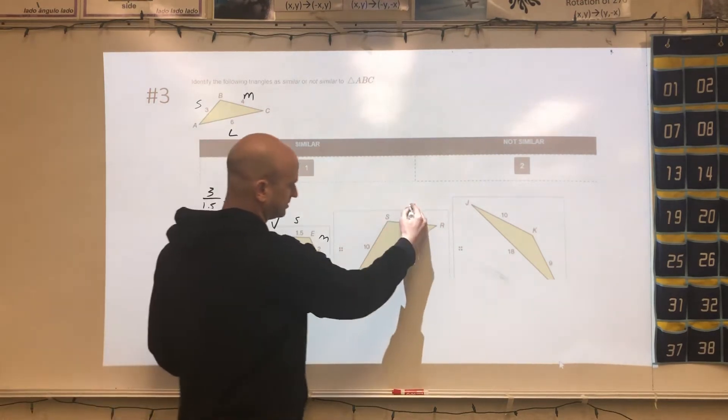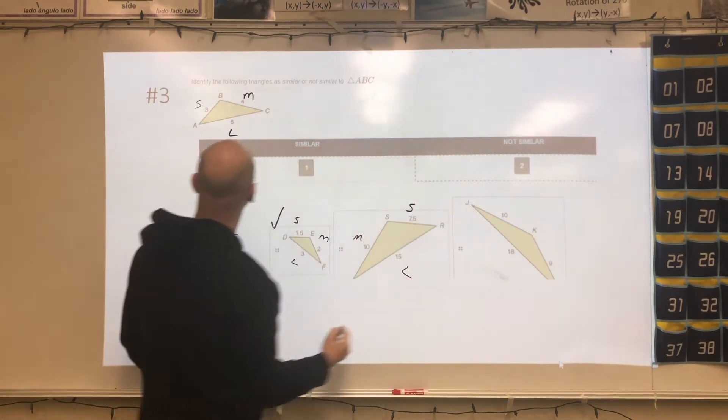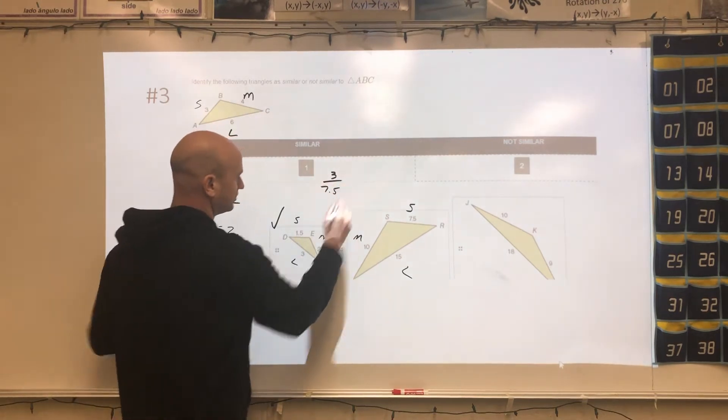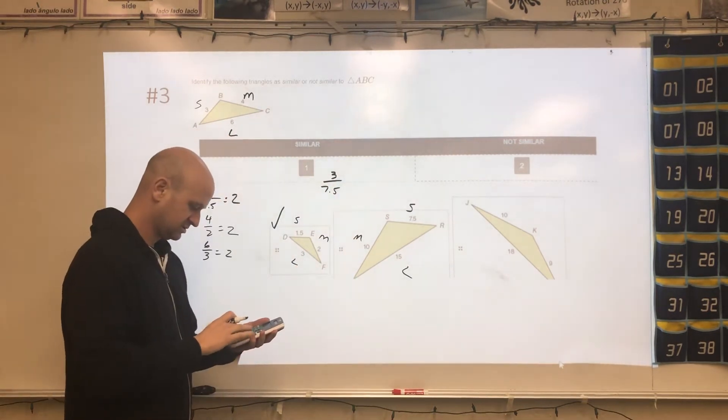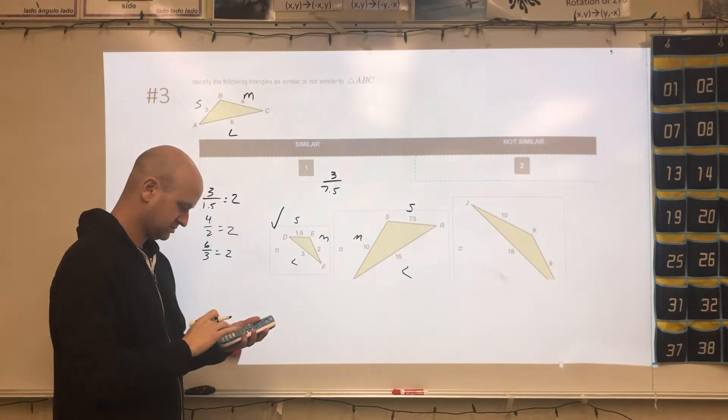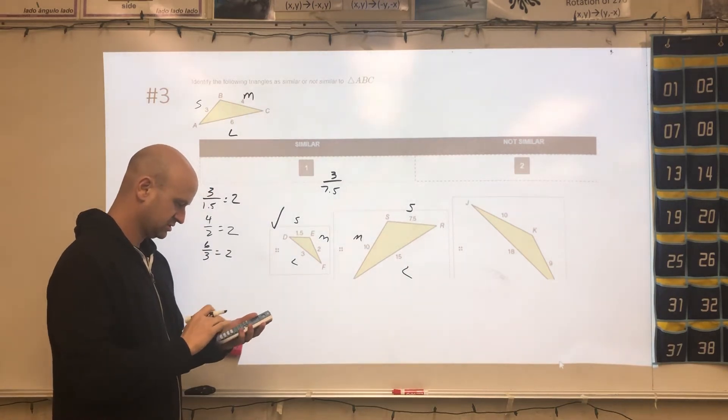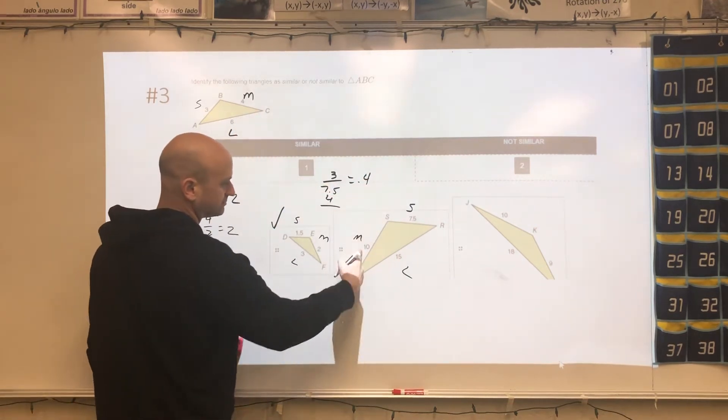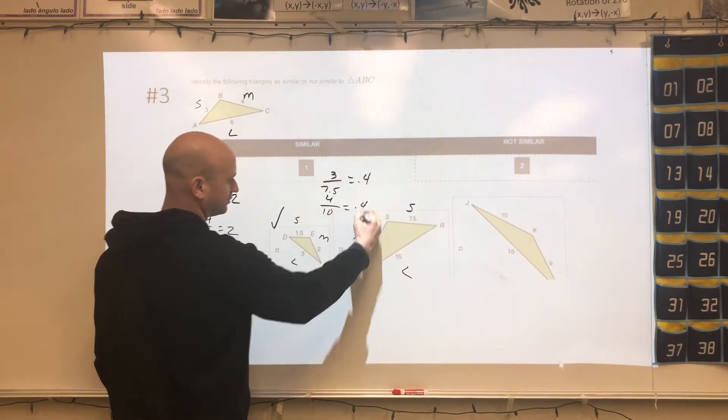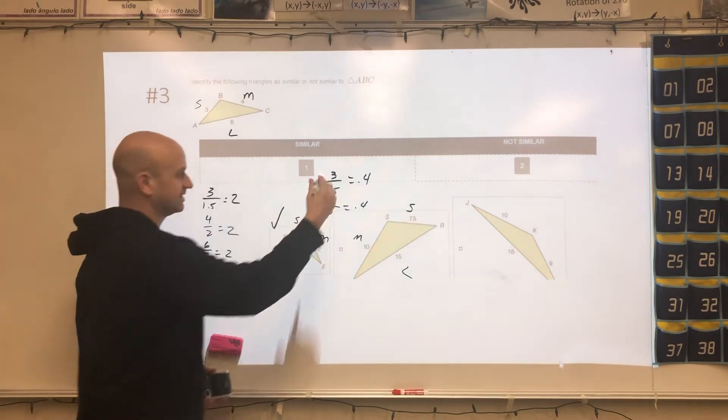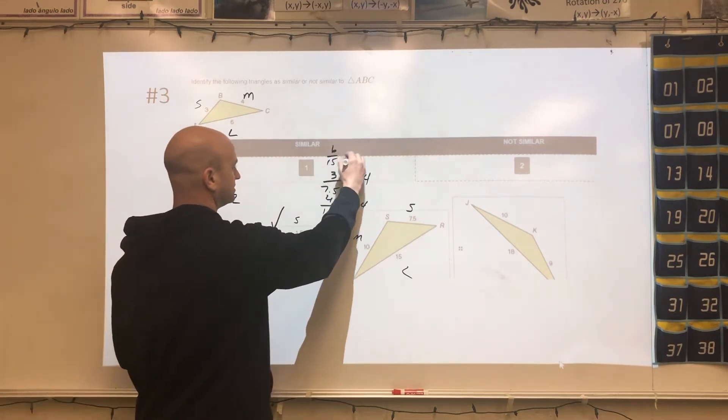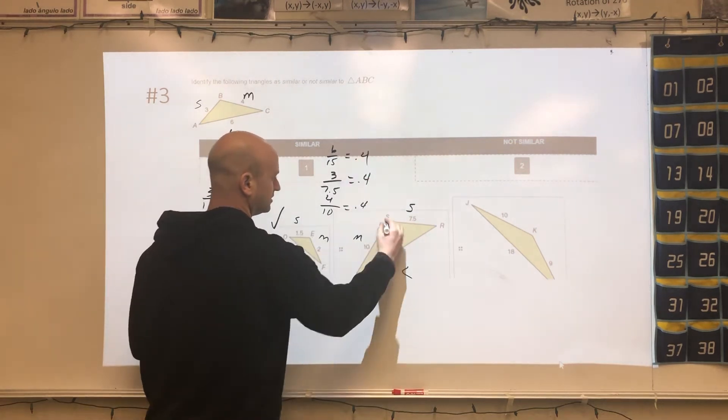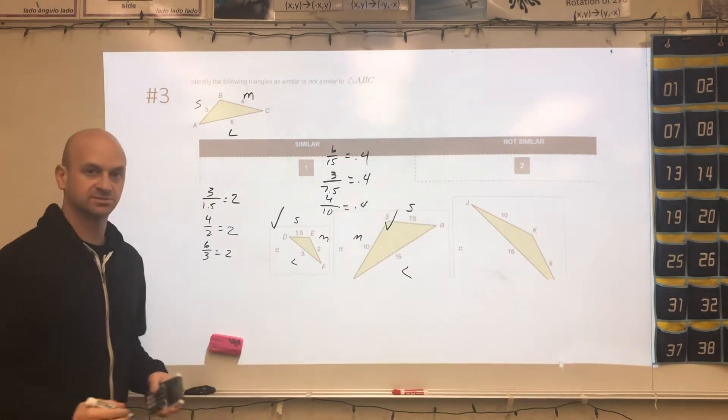All right, we'll go to this one. This would be small, medium, and large. So small would be 3 divided by 7.5, and I get 0.4. Medium would be 4 divided by 10 is 0.4. And then 6 divided by 15 is 0.4 as well. So this one would be similar as well.